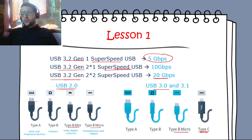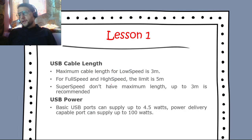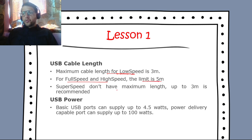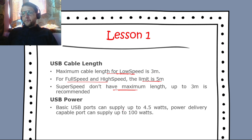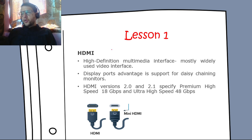USB cable length: maximum for low speed is 3 meters; for full speed and high speed the limit is 5 meters; SuperSpeed has no defined maximum but up to 3 meters is recommended. USB power: basic USB ports can supply up to 4.5 watts, and power delivery capable ports can supply up to 100 watts.